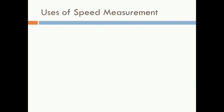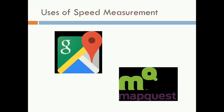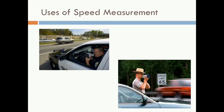Now let's talk about some uses of speed measurement. One use is taking the distance you have left to travel and dividing it by your speed to calculate how much time it's going to take you to reach your destination. Another, more obvious use of speed measurement are the speed traps used by police to catch speeders.